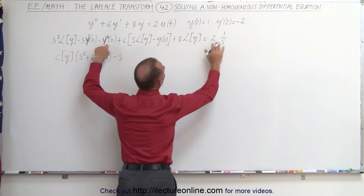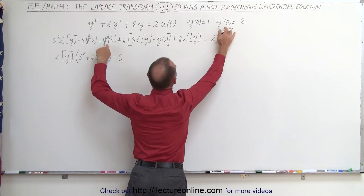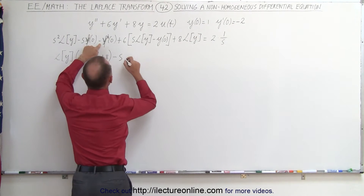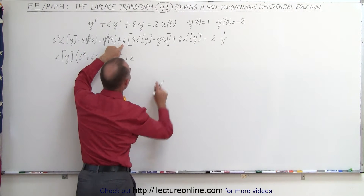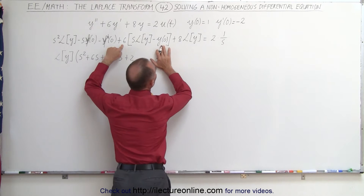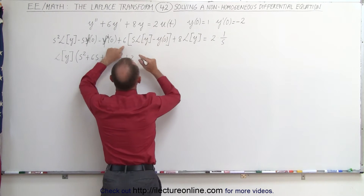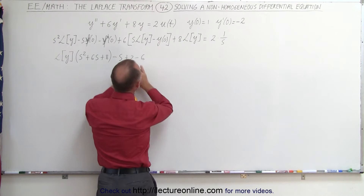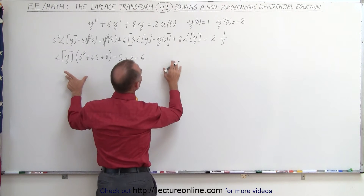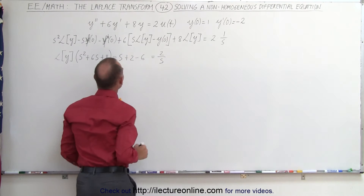The derivative of the function evaluated at zero is minus two, so with the negative sign that becomes plus two. And we have six times y evaluated at zero, which equals one, but there's a minus sign so it's minus six. I think we have everything accounted for, and this equals two over s.